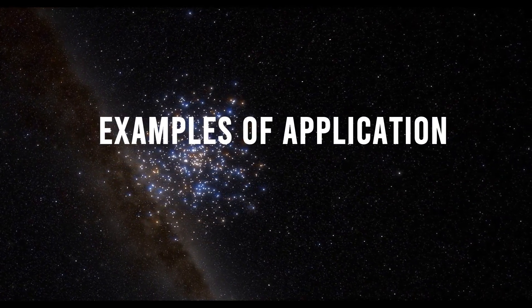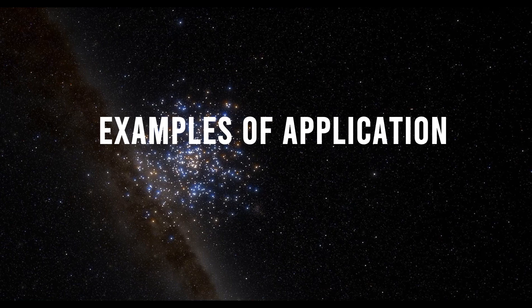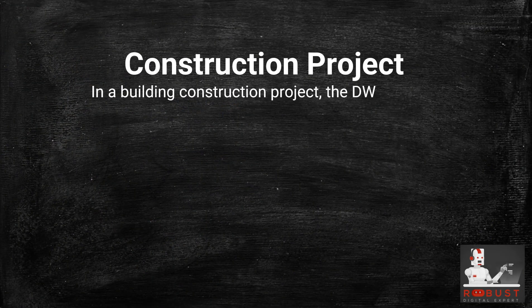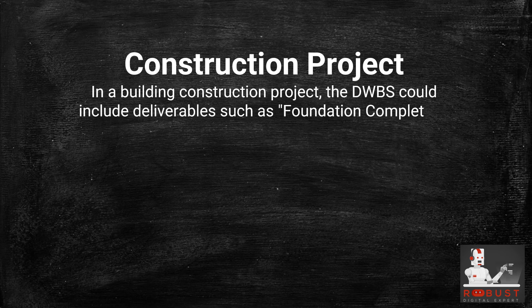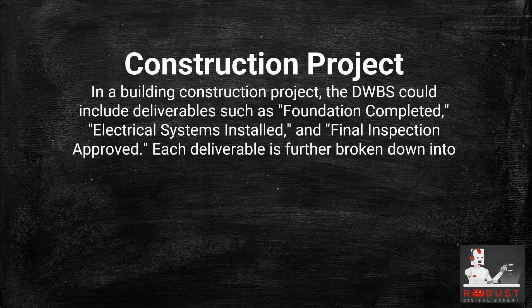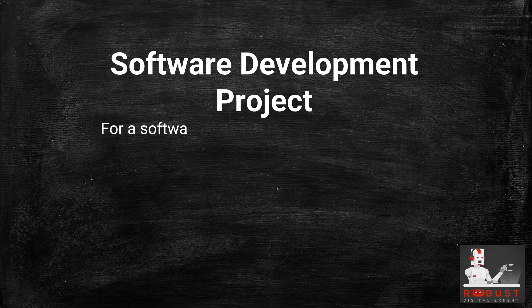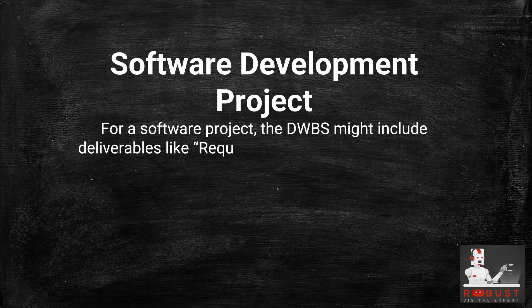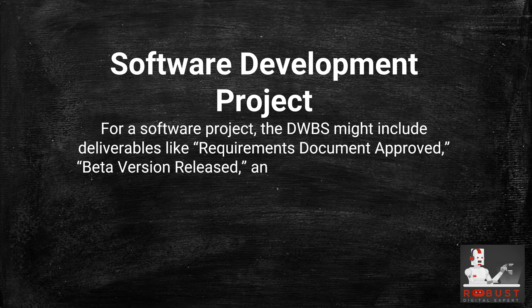Examples of application. Construction project: In a building construction project, the DWBS could include deliverables such as foundation completed, electrical systems installed, and final inspection approved. Each deliverable is further broken down into smaller components. Software development project: For a software project, the DWBS might include deliverables like requirements document approved, beta version released, and user manual delivered.